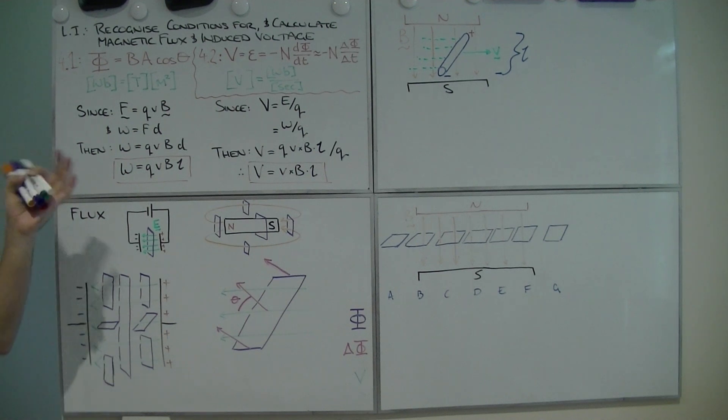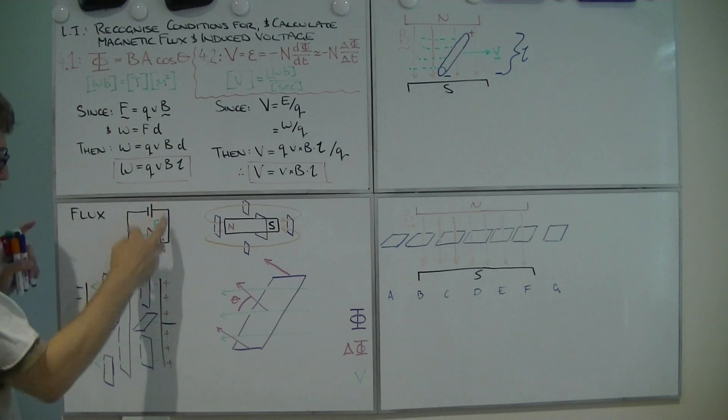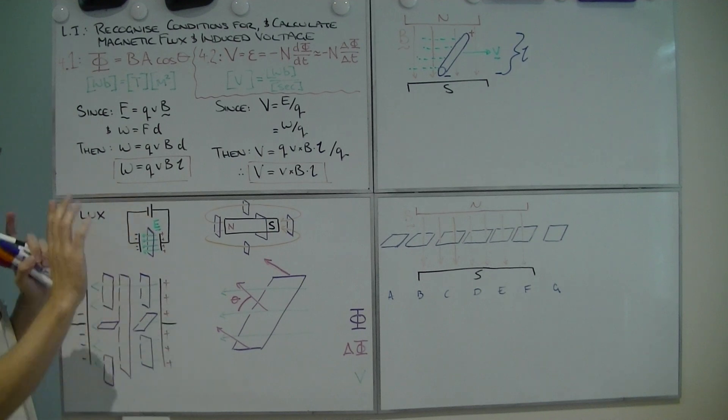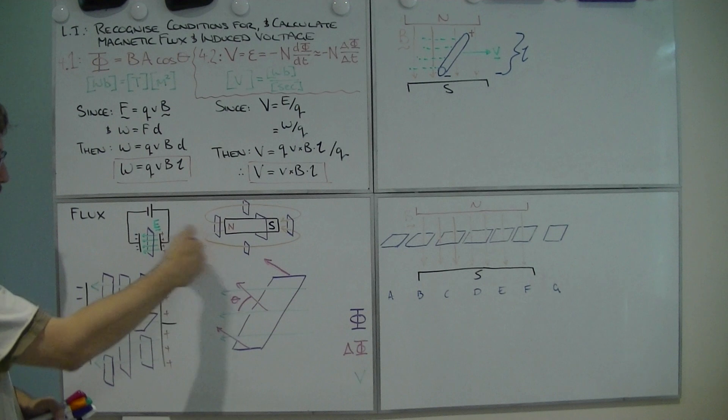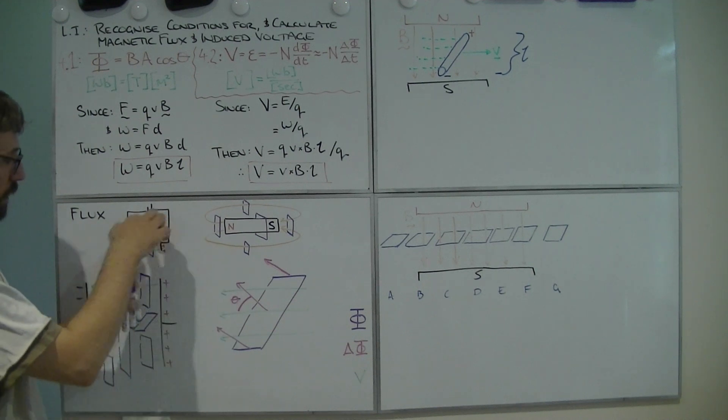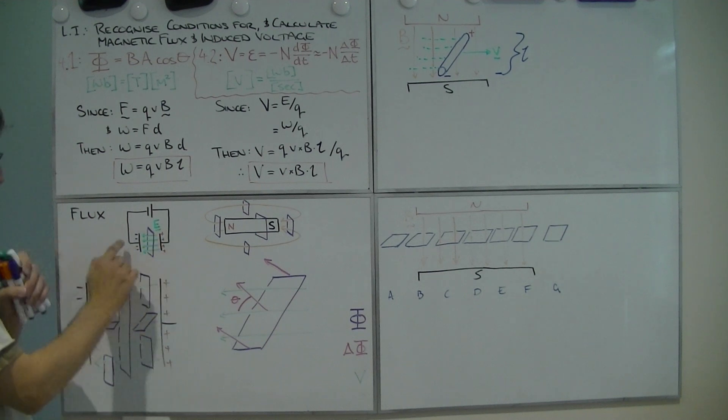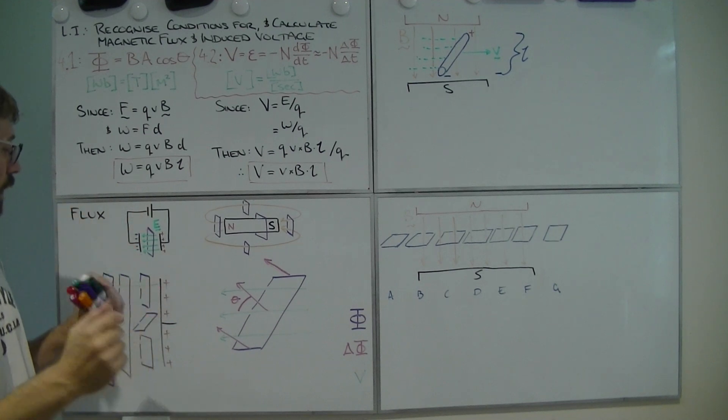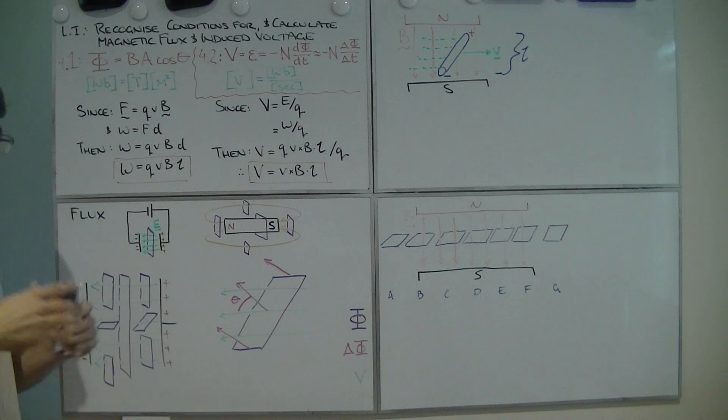B, we already know from before, is magnetic field strength. A is just going to be an area, and then this cosθ term, we can ignore if things are perpendicular or parallel. But that'll come in at the end, so I'll add that in last. Alright, well, magnetic fields are measured in tesla, areas in metres squared. So, you could say the flux is tesla metre squares, not tesla per metre square, tesla times metre square. But because that's a bit of a mouthful, there's a unit called the Weber, W-E-B-E-R, shortened to W-B.